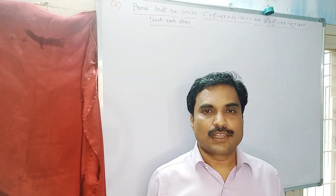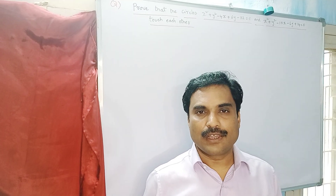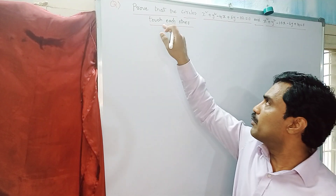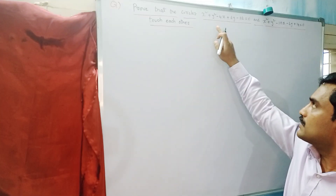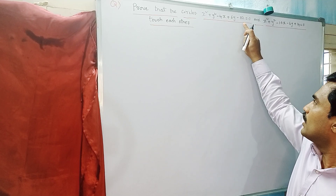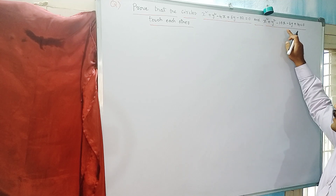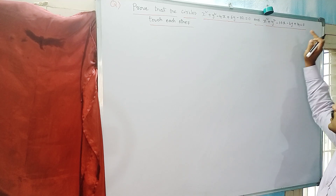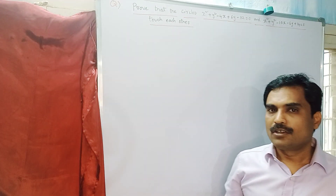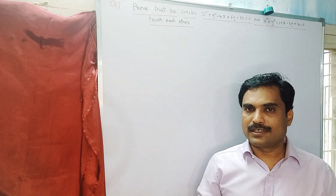Hi, welcome to my channel Yanam Takshasila. In this new video, I am going to solve a mathematical problem under analytical geometry. The problem is: prove that the circles x² + y² - 4x + 6y - 112 = 0 and x² + y² - 10x - 6y + 14 = 0 touch each other. Here, what you need to show is whether they touch each other internally or externally.